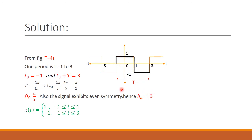Next, we need to know the value of x(t). From the graph, x(t) = 1 for the limit minus 1 to 1 (the amplitude value is 1 from minus 1 to 1), and x(t) = minus 1 for the limit 1 to 3.